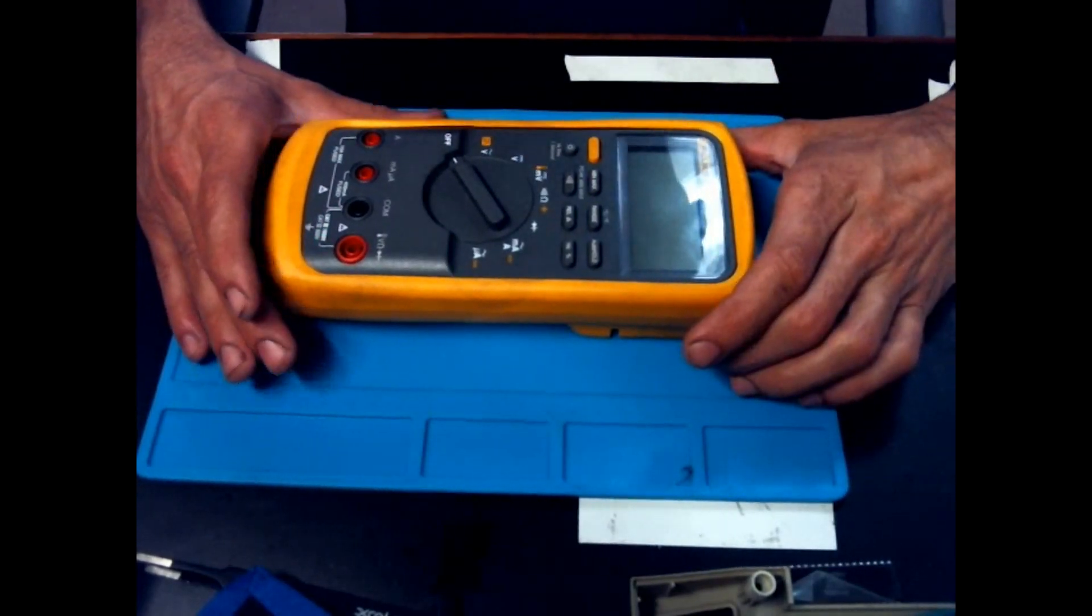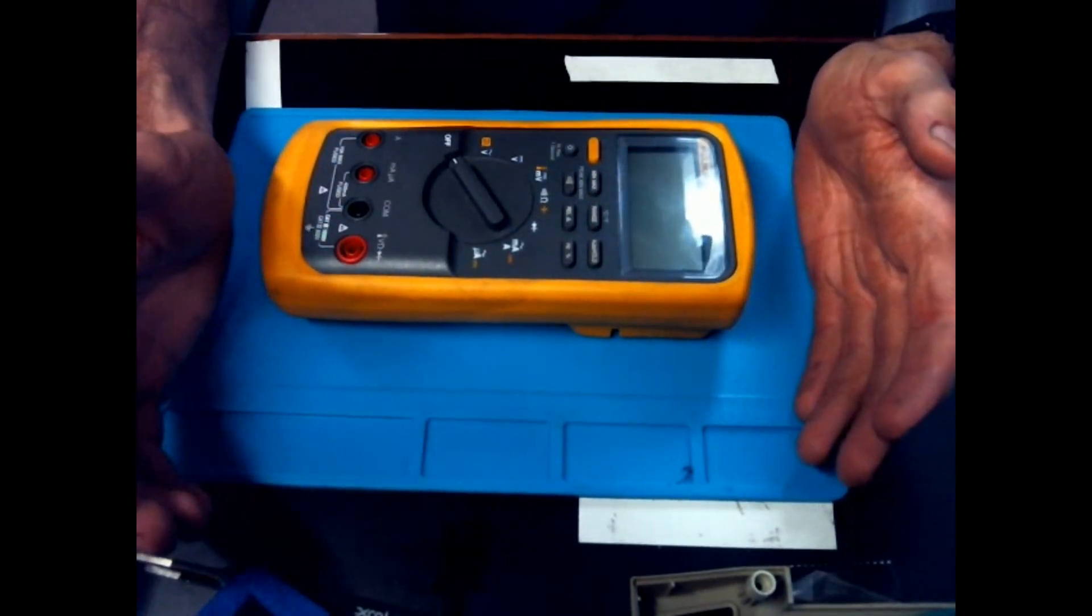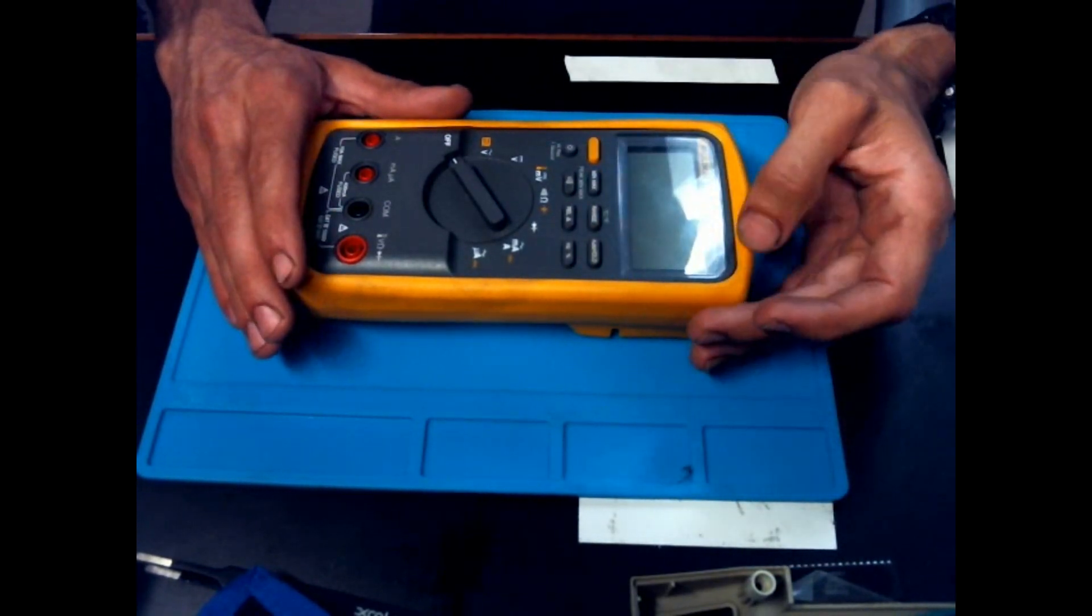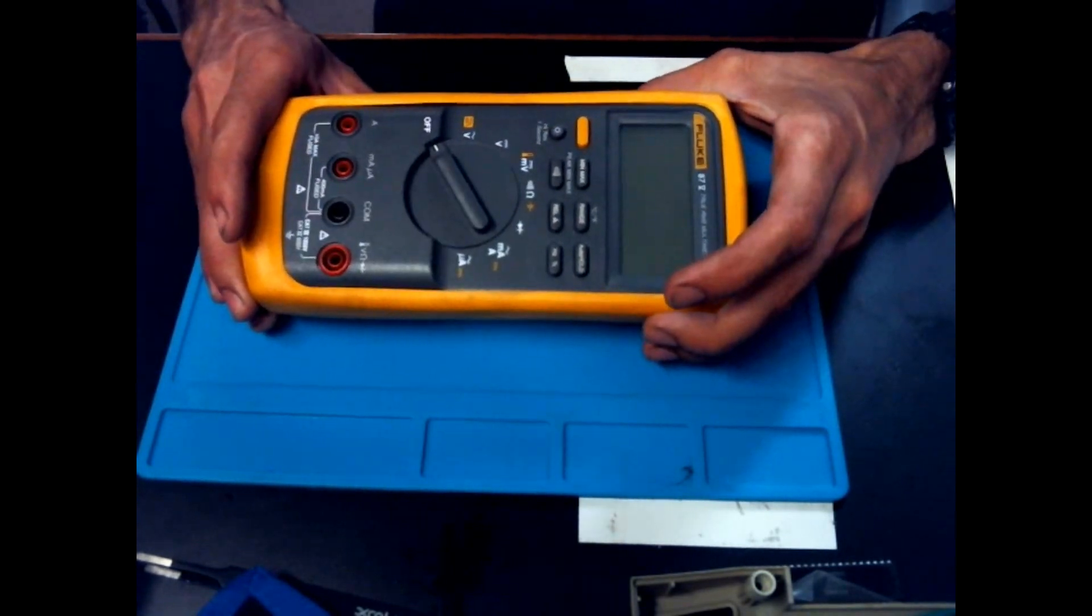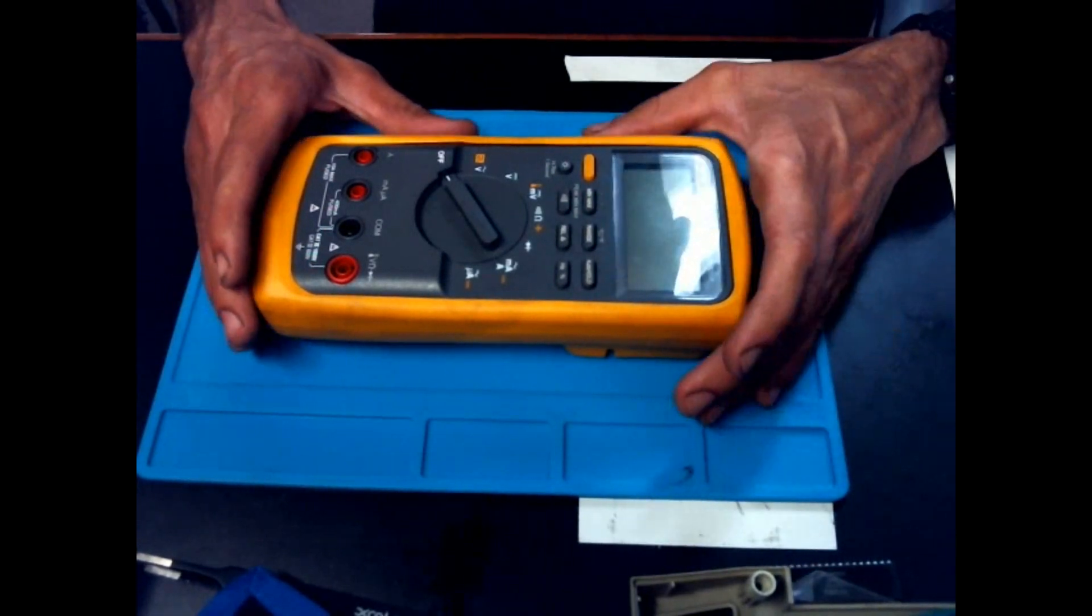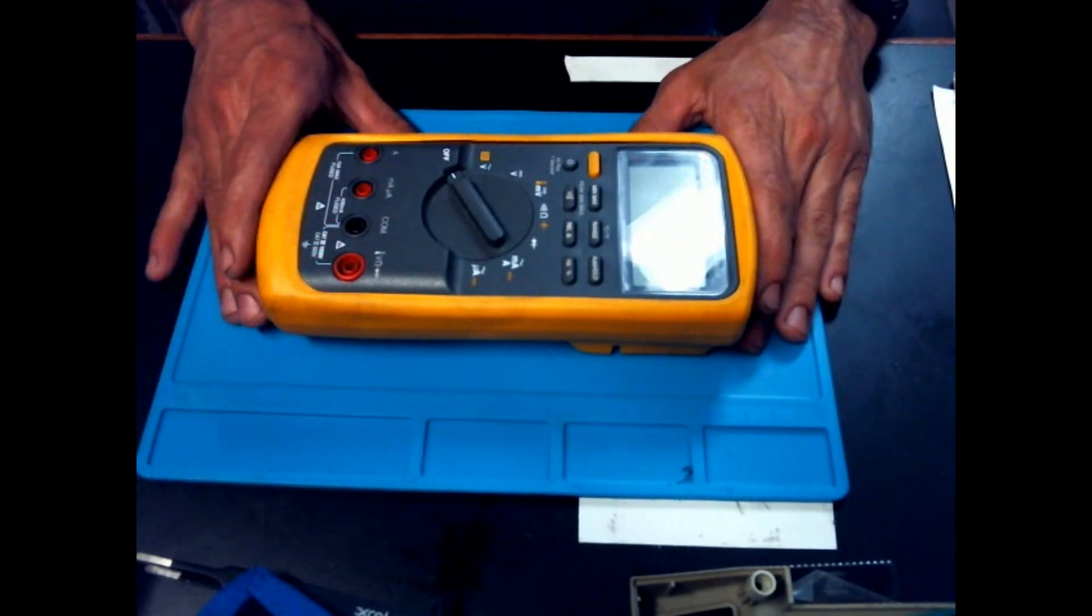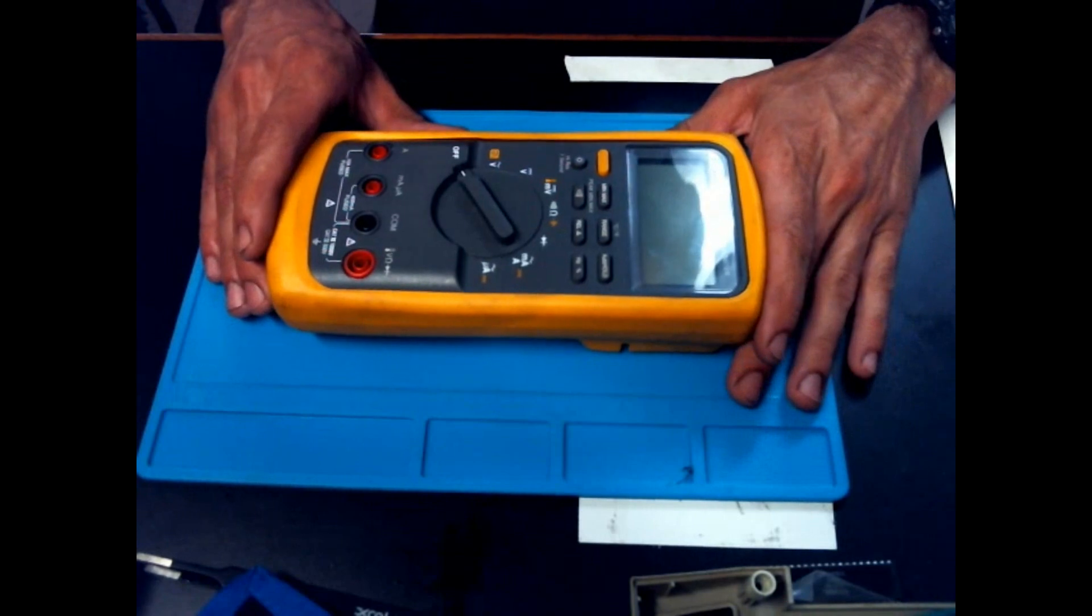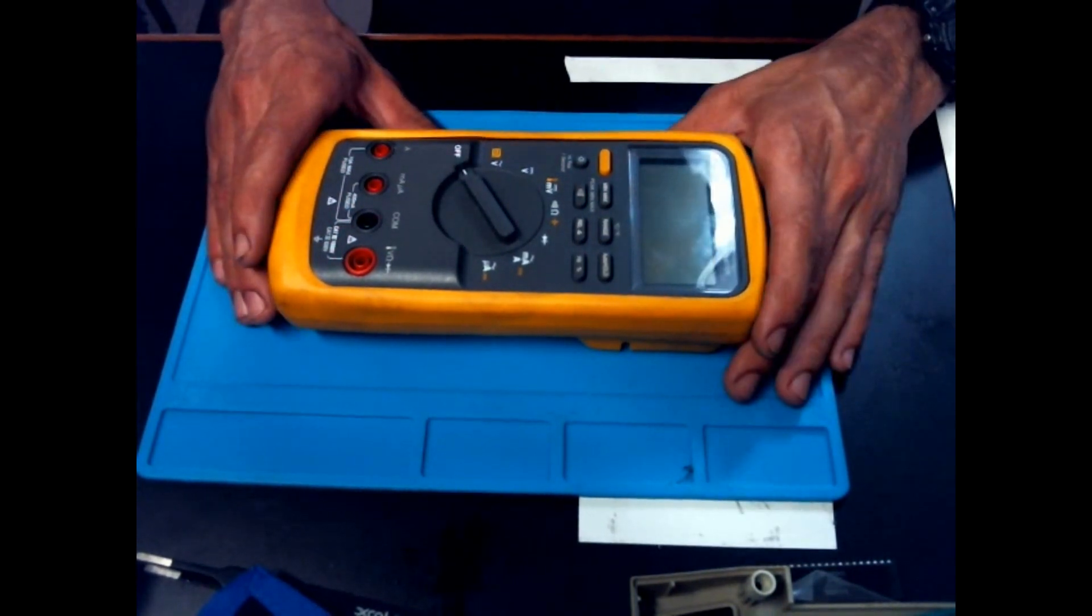So today I figured we'd take a look at the Fluke 87V. Now when you're talking to a lot of people about multimeters, especially high-end multimeters, the 87V or 87.5, you can say it either way, is what comes to mind for a lot of people as the multimeter for electronics. Now, the funny thing about the 87.5 is that it is not technically an electronics multimeter. It can be used for that, but it is actually an industrial multimeter.